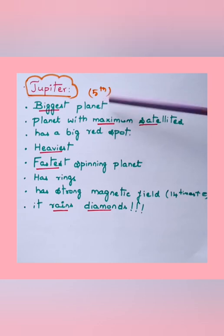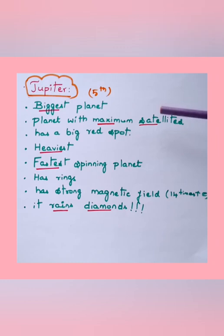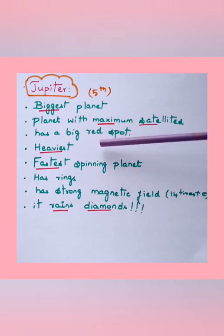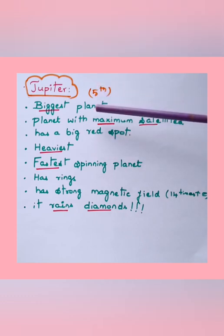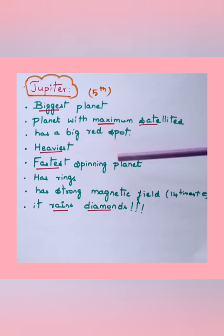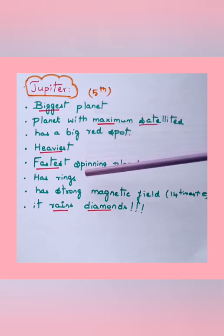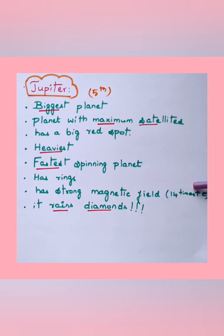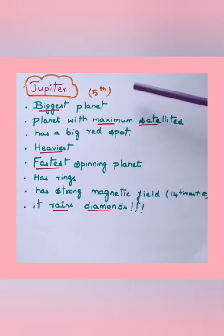Jupiter is the fifth planet and the biggest planet in the solar system. It has the maximum number of satellites and a big red spot. It is the heaviest planet and also the fastest spinning planet in the solar system. Jupiter has rings, a strong magnetic field about 14 times that of the earth, and it sometimes rains diamonds on Jupiter.